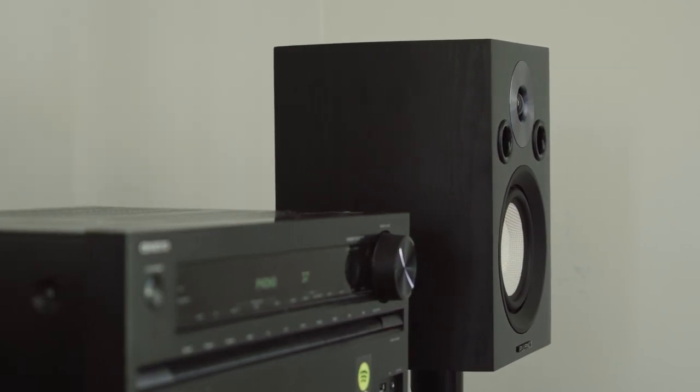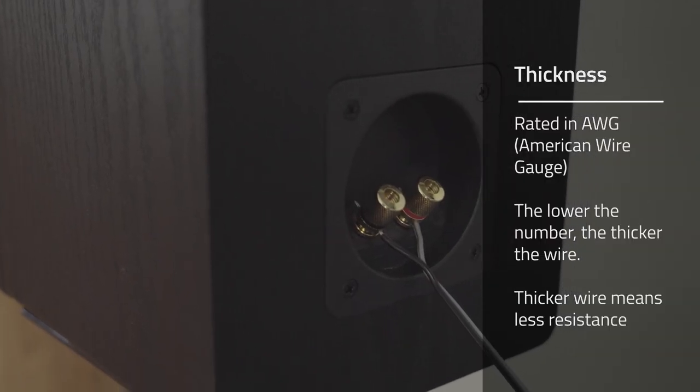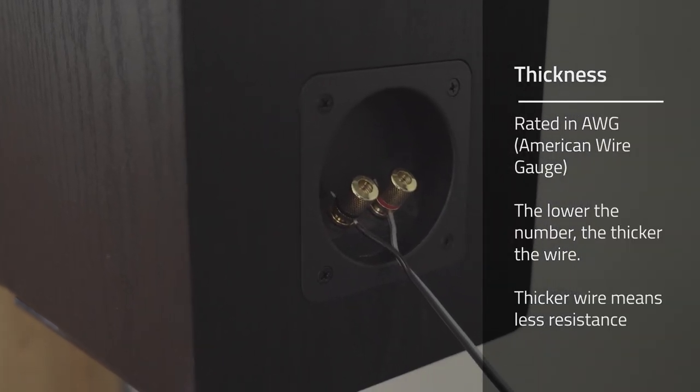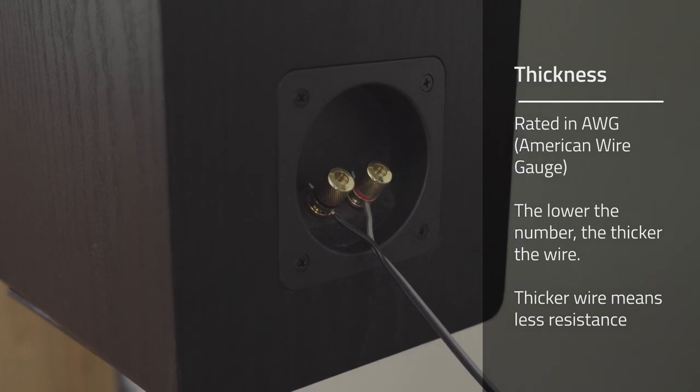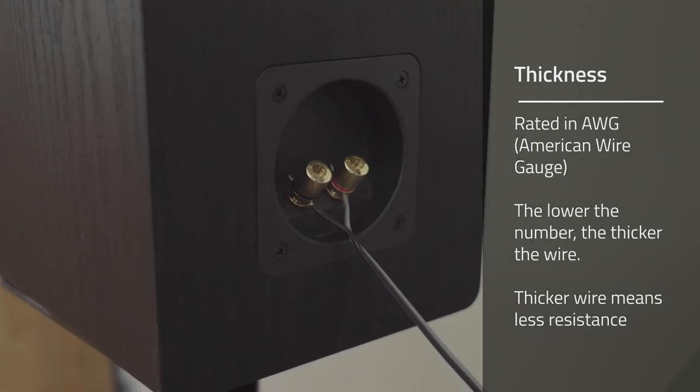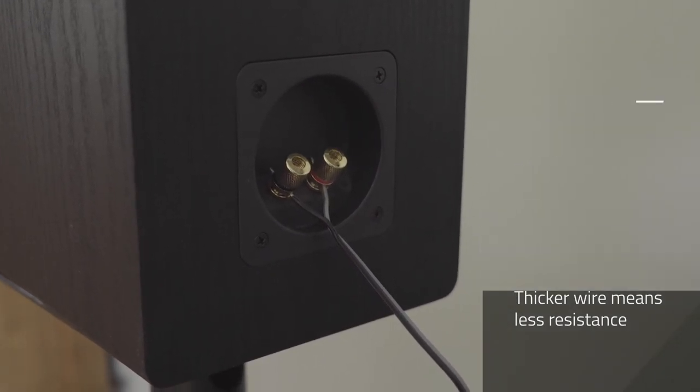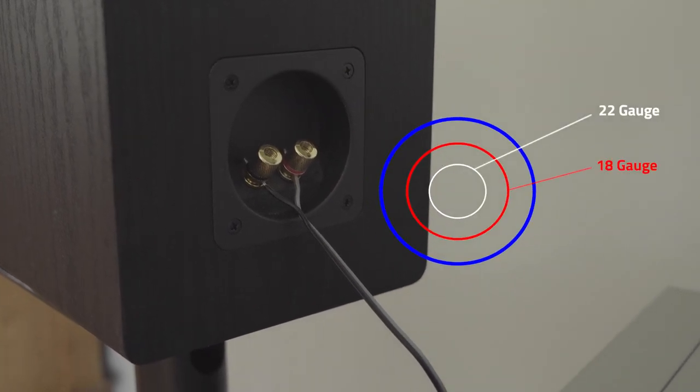Thickness. The first spec you'll notice when you're looking at a speaker wire is thickness. Thickness is rated in AWG or gauge. AWG stands for the American Wire Gauge. The smaller the number, the thicker the wire.